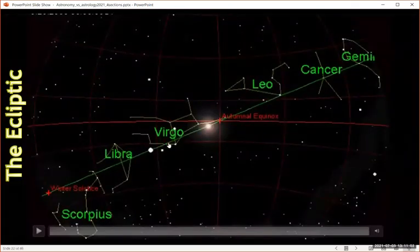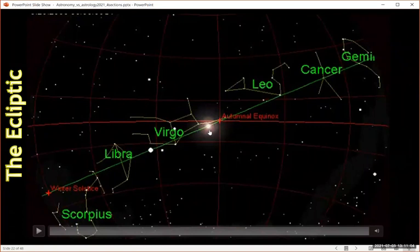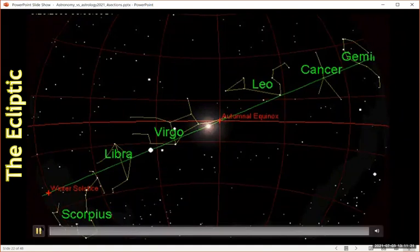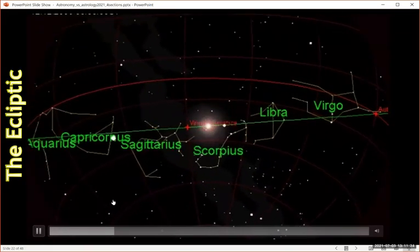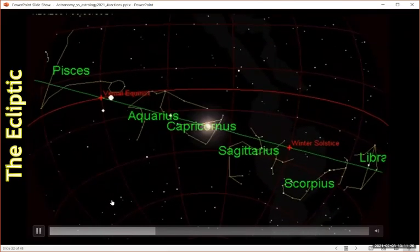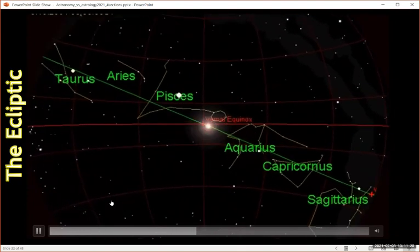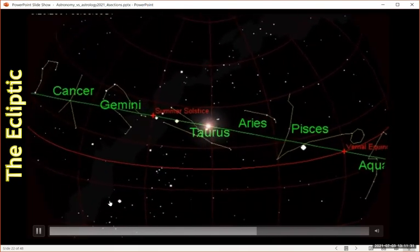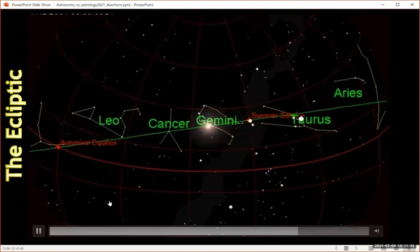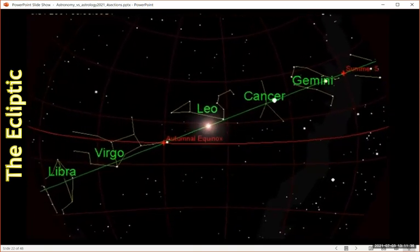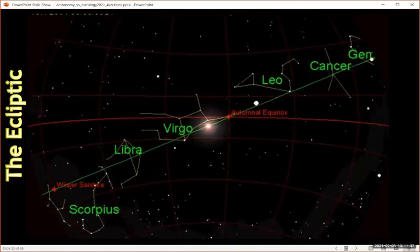Here what we've got is we're looking towards the sun. I've switched off the atmosphere. We're going to be pointing towards the sun, basically above the atmosphere, looking towards the sun from the Earth. We're going to watch what constellation the sun appears to be in as a year goes by. Here you can see it's in Virgo, and then Libra, and then Scorpio, Sagittarius, Capricorn, Aquarius, Pisces. We keep going. Here we're in Leo, so it must be August, September, and we're back again.